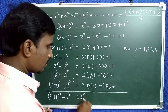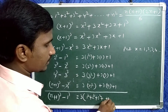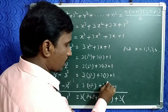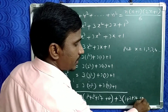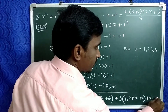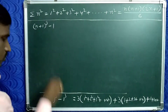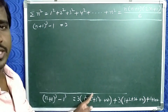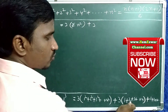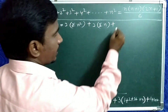On the right side, take 3 common from the square terms: 3(1²+2²+3²+...+n²) = 3·σn². Then take 3 common from the linear terms: 3(1+2+3+...+n) = 3·σn. Plus 1+1+1+... n times = n. So: (n+1)³ − 1 = 3·σn² + 3·σn + n.